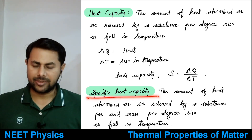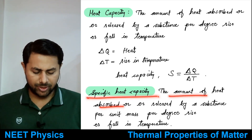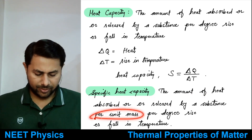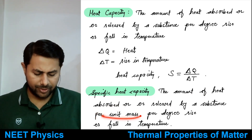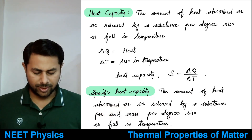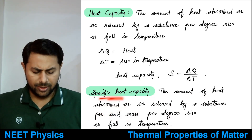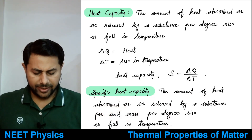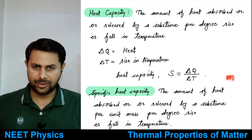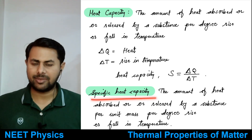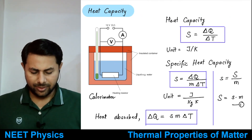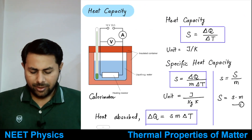Specific heat capacity is the amount of heat absorbed or released by a substance per unit mass and per degree rise or fall in temperature. You divide the heat capacity by the mass of the substance to get the specific heat capacity.